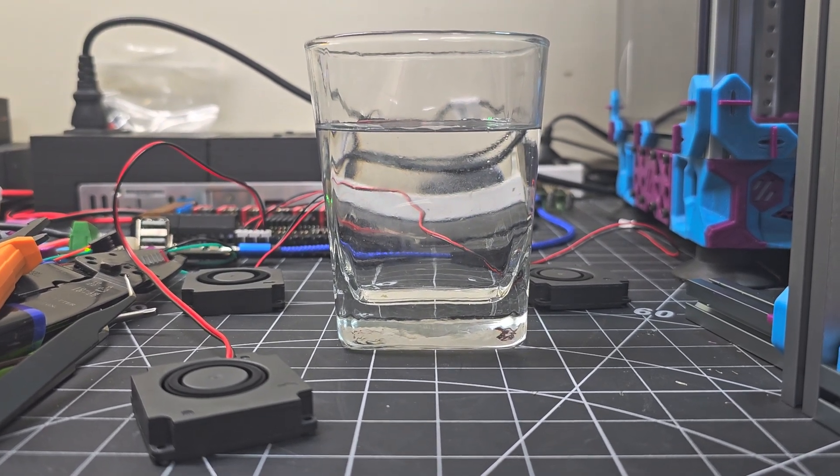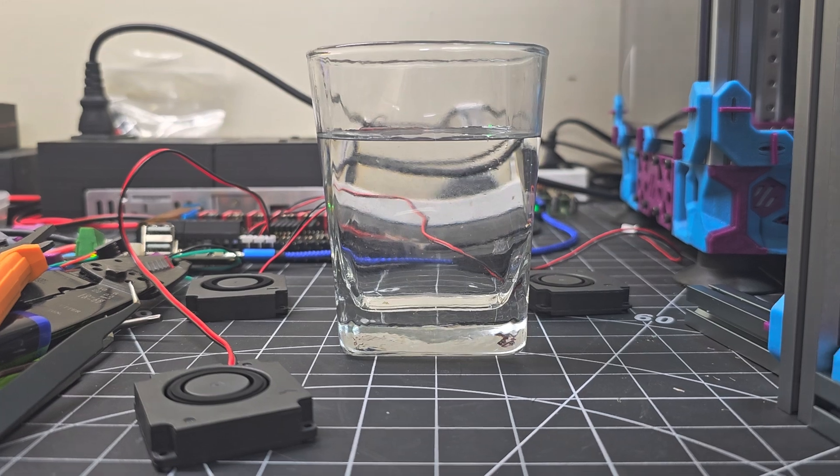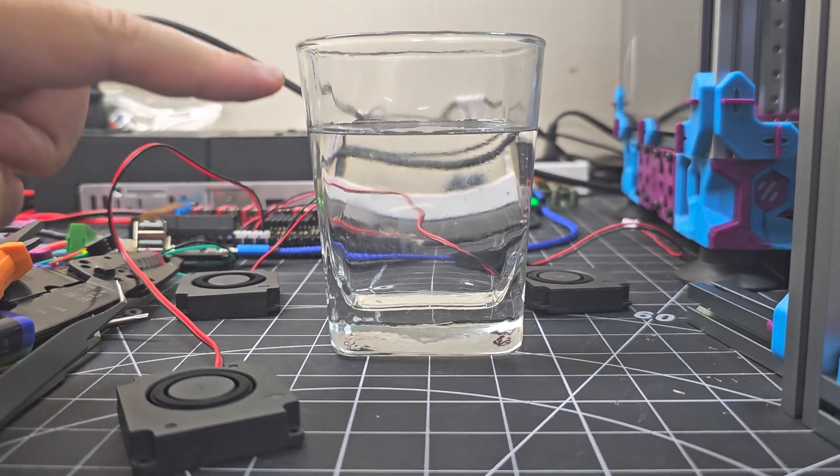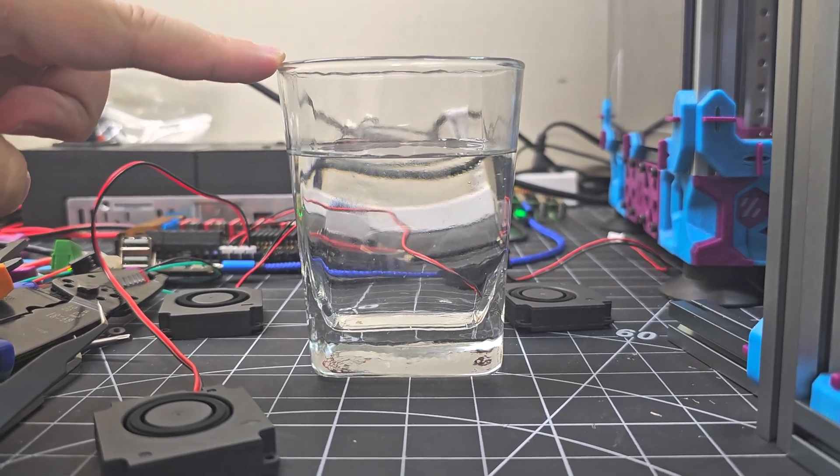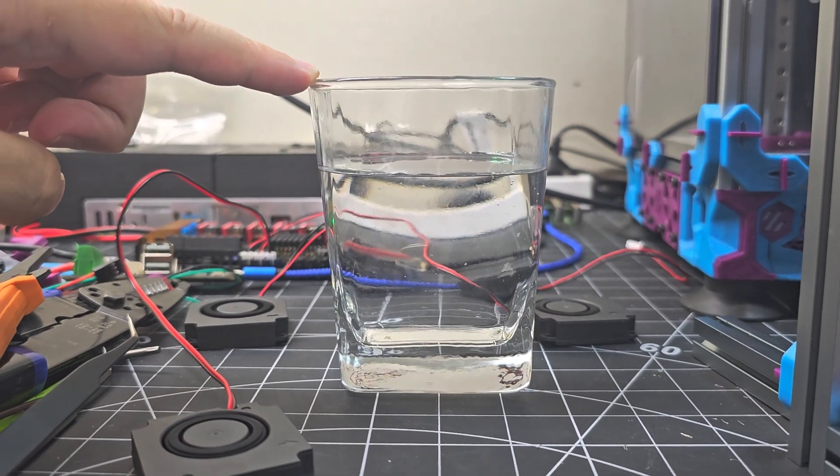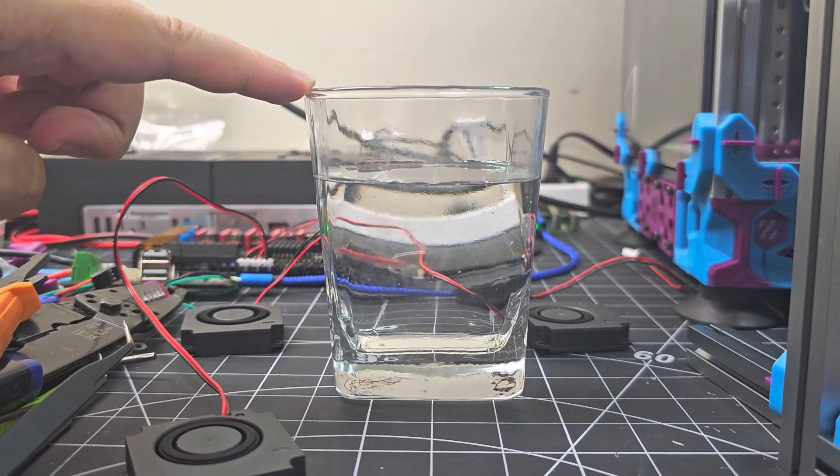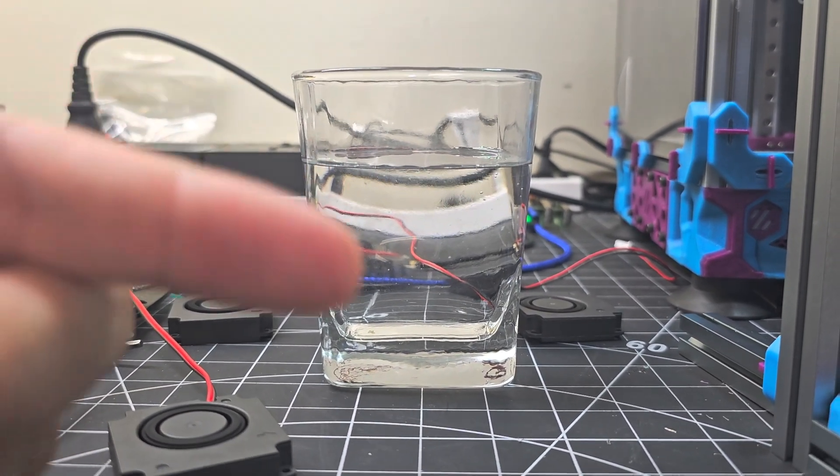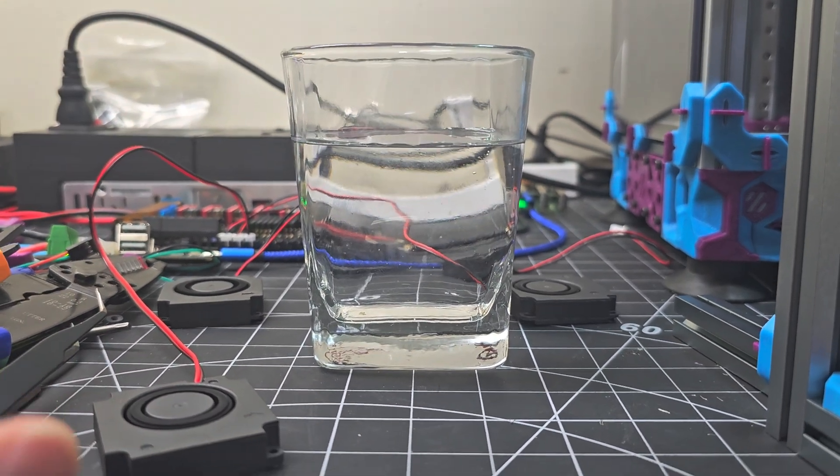I'm simply going to hold each fan at the height of the glass here above the glass of water, and we'll see if there's any noticeable difference in the amount of turbulence created in the water below.